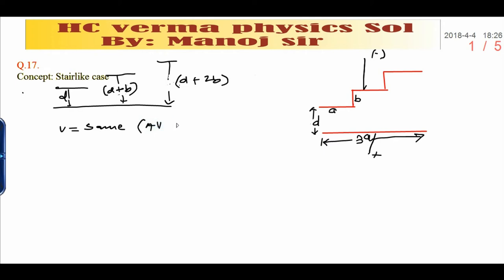If potential difference is same, it means all capacitors are connected in parallel. If they are connected in parallel, I can write the structure in simplified manner.